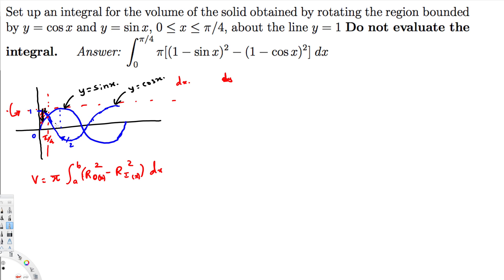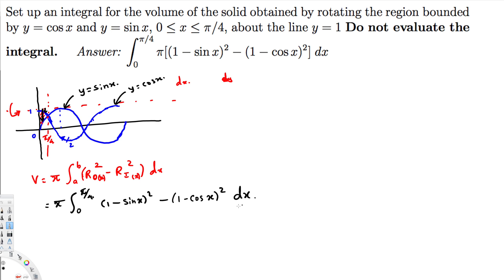To find the distance, we take the top function minus the bottom function. The axis of rotation is y equals 1, so the outer radius is 1 minus sin x, and the inner radius is 1 minus cos x. The integral becomes: V equals π times the integral from 0 to 5π/4 of [(1 minus sin x)² minus (1 minus cos x)²] dx.